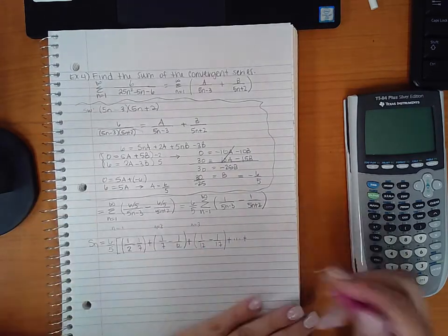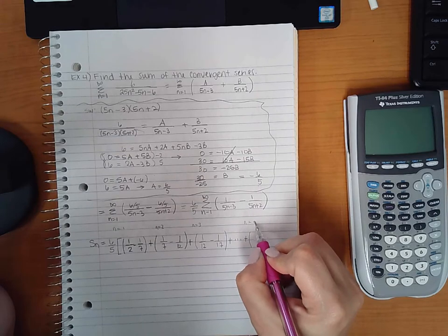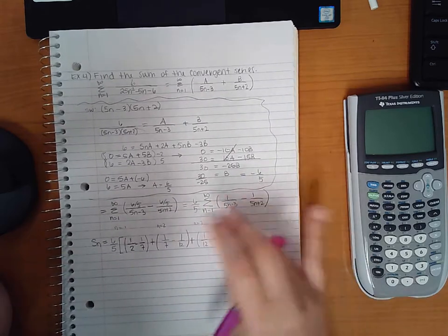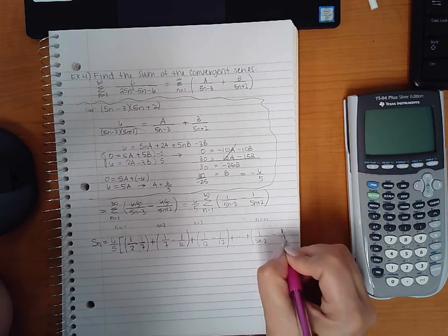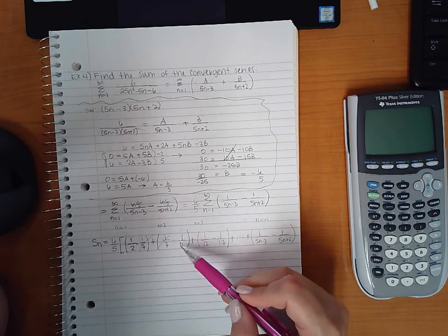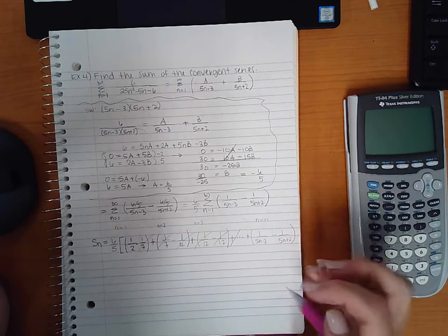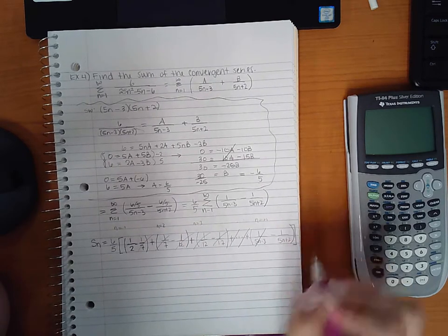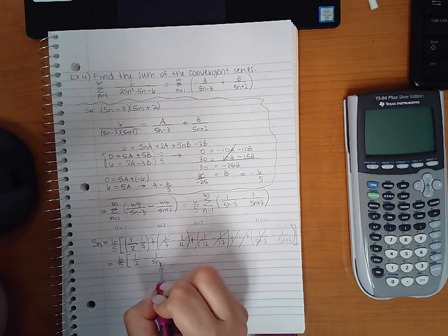And then I could keep going, but I want to jump to the second to last term and then the nth term. I could just jump straight to the very last term when n equals n. So when I get that, I'm going to get 1 over 5n minus 3 minus 1 over 5n plus 2. And notice this negative 1 seventh cancels with the positive 1 seventh after it. Negative 1 twelfth cancels with a positive 1 twelfth after it. This negative 1 seventeenth will cancel with a positive 1 seventeenth afterward. And this positive fraction will cancel with a negative one before it. So what I'm left with is 6 fifths times 1 half minus 1 over 5n plus 2.